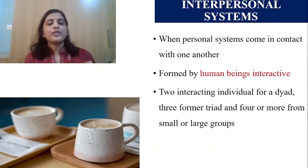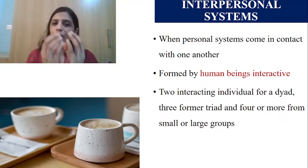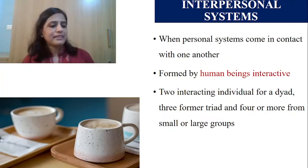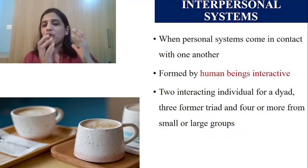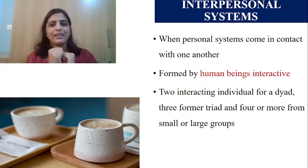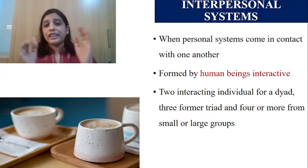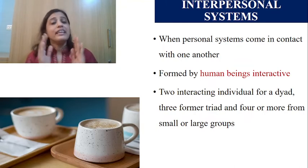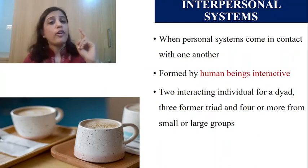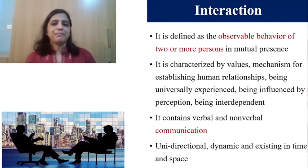Now, what is an interpersonal system? When two personal systems come in contact with each other, they become an interpersonal system — like two cups coming together. In this theory, it is the nurse and the patient. Two personal systems come into contact, especially when human beings interact. King made it clear: two persons form a dyad, three persons form a triad, and four or more persons form a group.